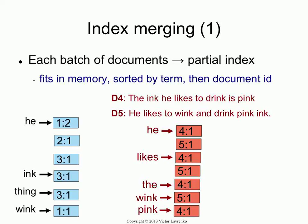Now you have two separate indices: one built from documents 1 to 3, and one built from documents 4 and 5. They're stored the same way — unrolled into one long sequence of tuples, sorted by term. The word 'he' and its tuples are followed by 'ink' and its tuples, and so on — one big sorted list. Each partial index was small enough to be computed entirely in memory. But once you do this many times, you end up with many small indices, and many small indices isn't great for retrieval — you need to combine them.